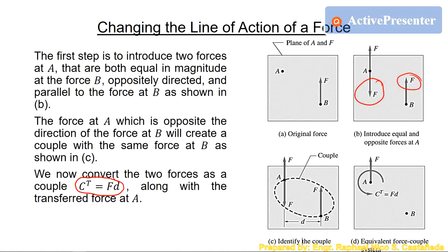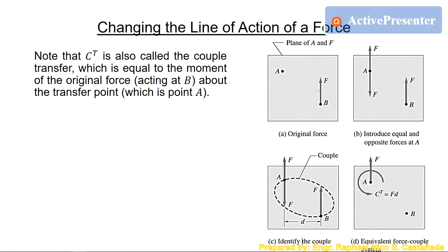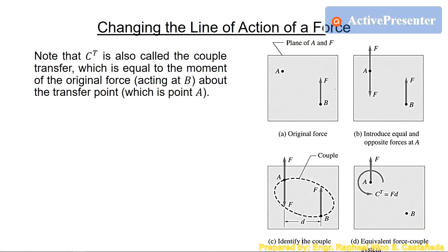What will happen is that one force will remain at that particular point — this is the transferred force from point B to point A. But as a penalty of transferring the force from point B to point A, there will be a couple produced to make the two systems equivalent. Note that Ct, also called the couple transfer, is equal to the moment of the original force acting at point B about the transfer point, which is point A.